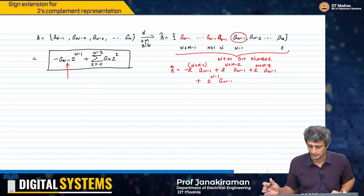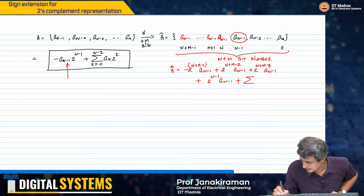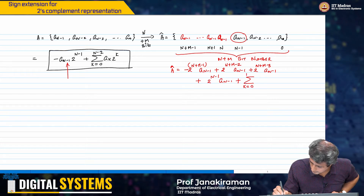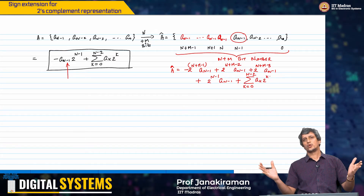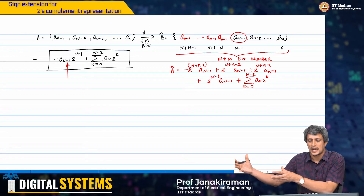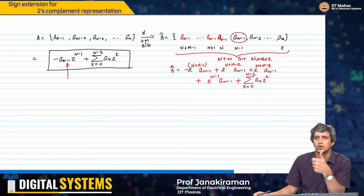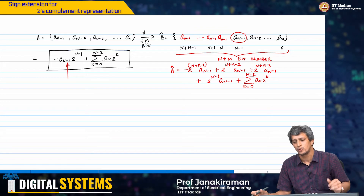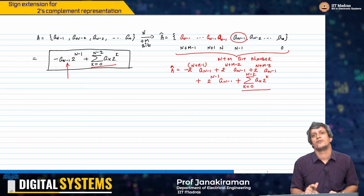Then I just continue writing this as the summation from k equal to 0 to n minus 2 of A_k times 2^k — that is the usual thing, because the bottom n minus 1 bits are basically unaltered. That is A_0 to A_(n-2), it is the same thing. So the value also does not change. This value is already equal to this value.